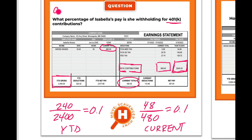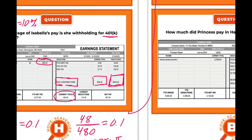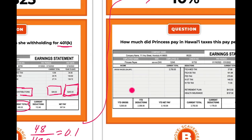Either way, the answer is 10%. Point one equals 10% — multiply 0.1 by 100 to get the percentage. Walk around and there's our answer.